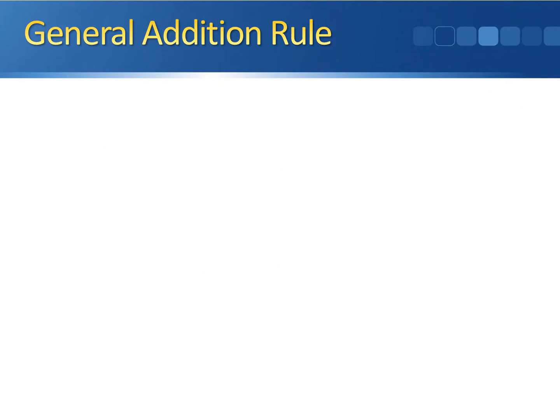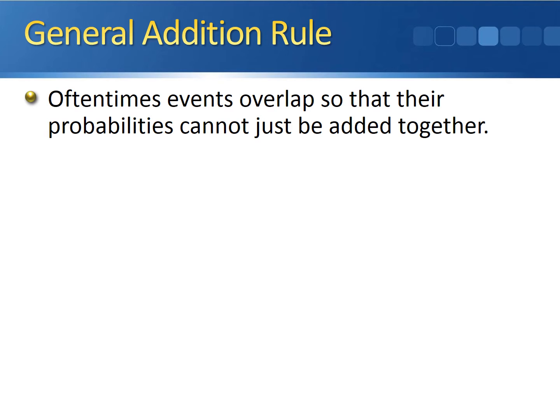It would be nice if all events were mutually exclusive so we could just add individual probabilities together. But often that isn't the case. A lot of the time, events overlap so their individual probabilities can't just be added together. Since there are times when events can happen at the same time, we want to make sure we're not counting certain events twice — because if we do, we're adding more probability to our final answer than we should be.